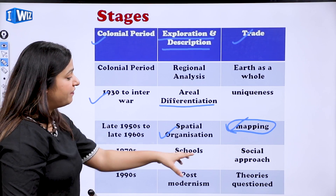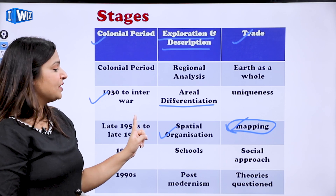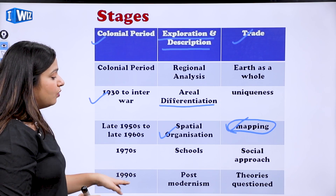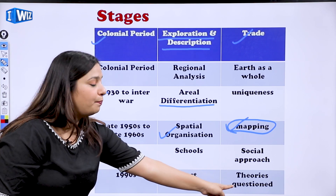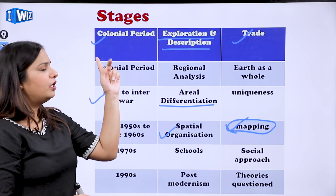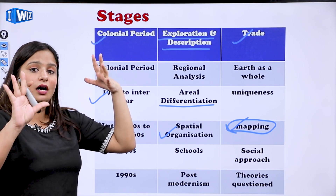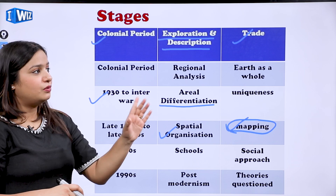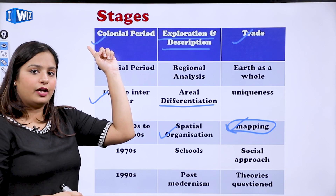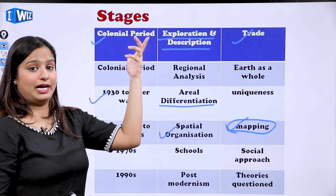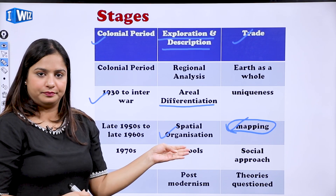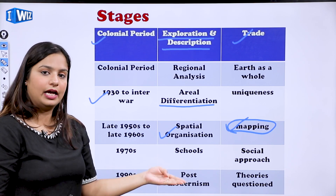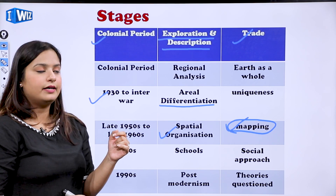In the 1970s, different schools emerged — humanistic, radical, and behavioral — representing a social approach to studying society. Then in the 1990s came Post-modernism, which questioned existing theories. For example: is it necessary that a theory developed in Europe — about climate change or determinism — will also apply in India? A regional approach emerged saying we should not generalize.